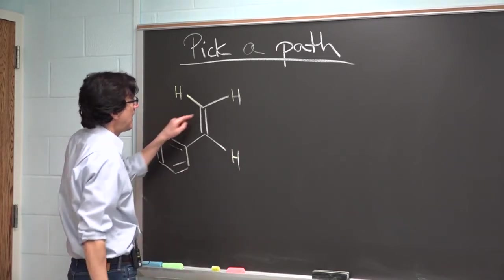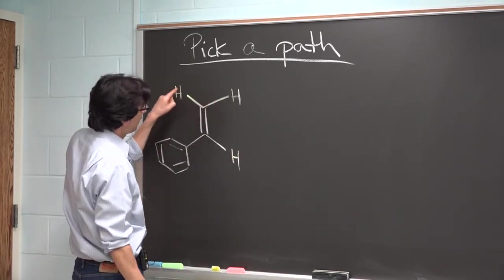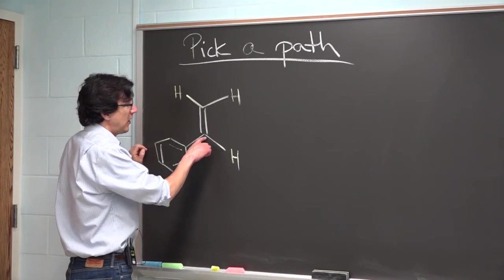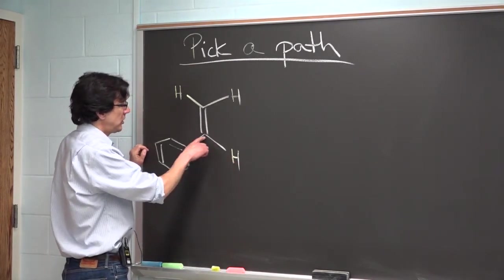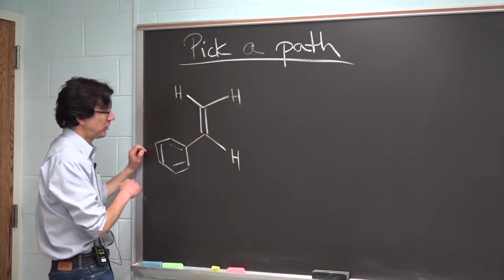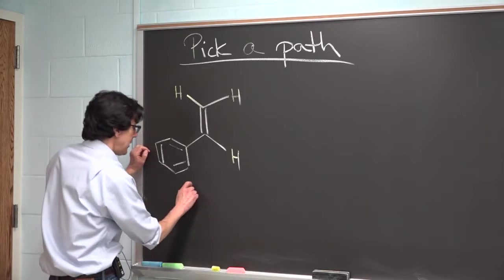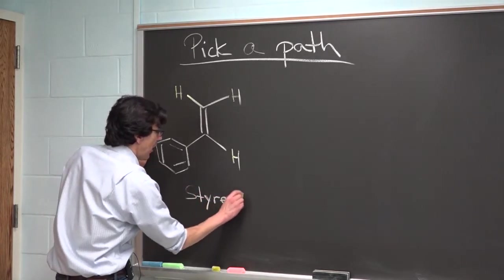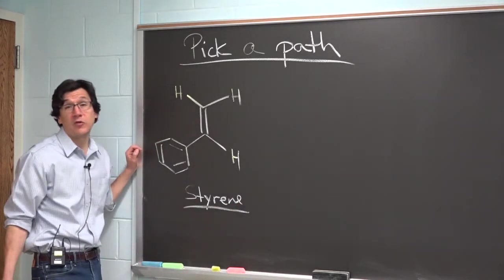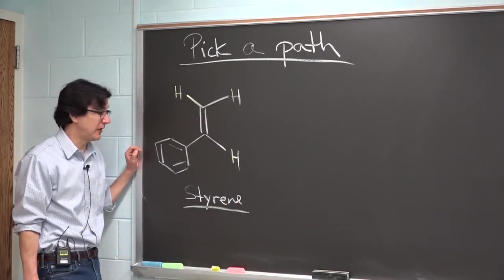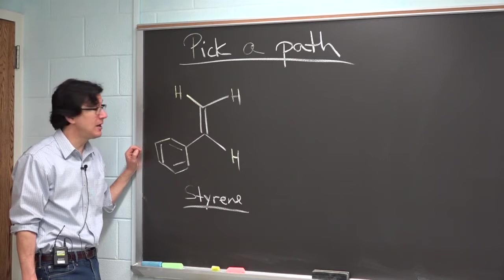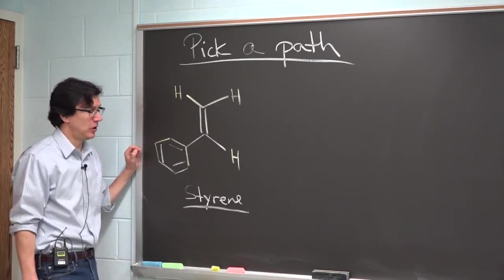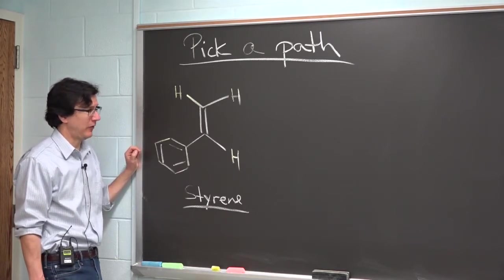This alkene has at one end of the double bond two hydrogens. At the other end, it has one hydrogen and a phenyl group. This particular alkene is called styrene. It's a polymer of styrene that makes up styrofoam, by the way. Styrofoam is made out of polystyrene, but that we will maybe discuss a little bit later in the semester.